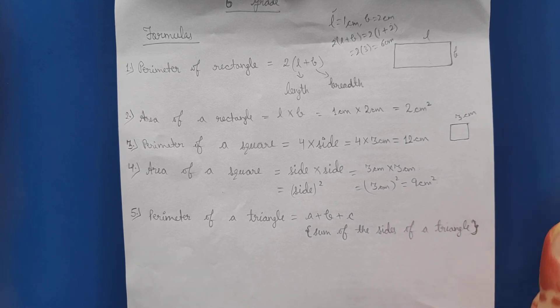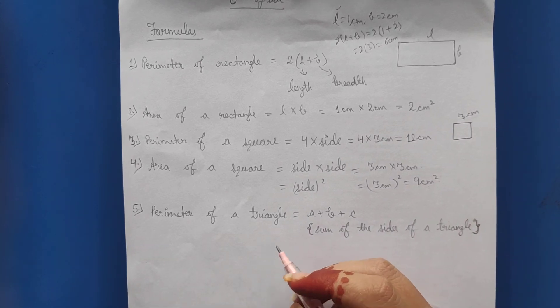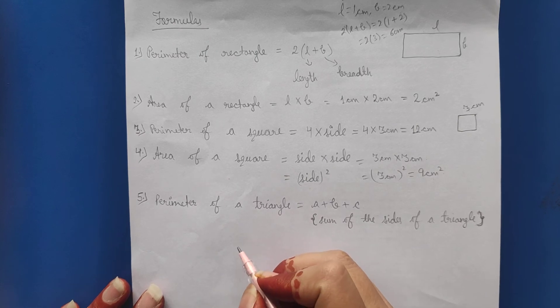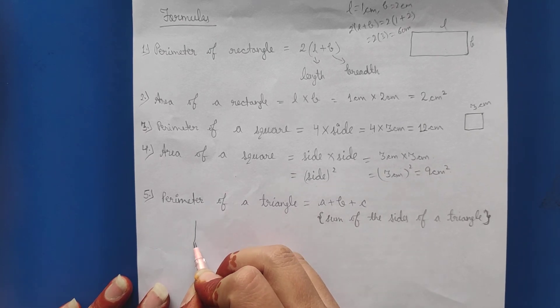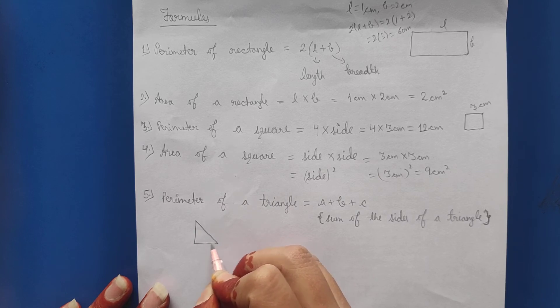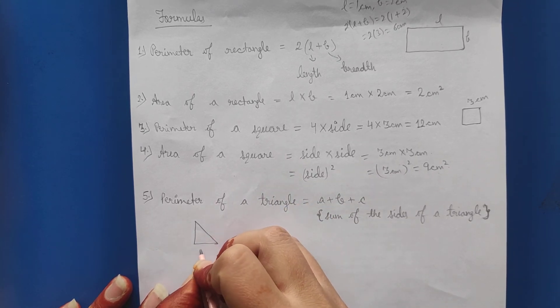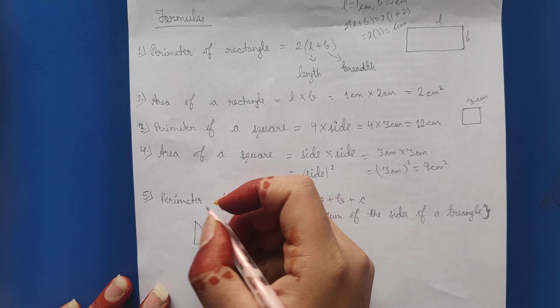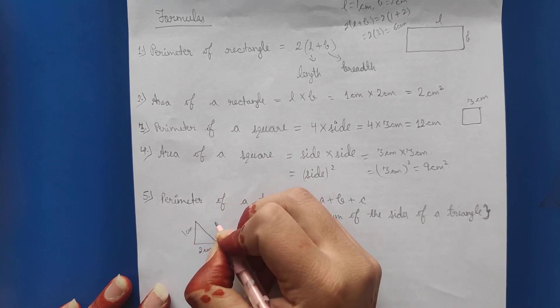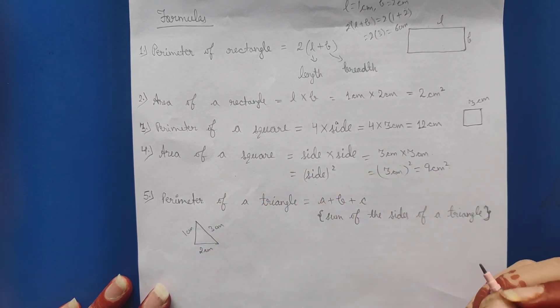Next students, perimeter of a triangle. Suppose we have this triangle with sides 2 centimeter, 1 centimeter, and 3 centimeter.